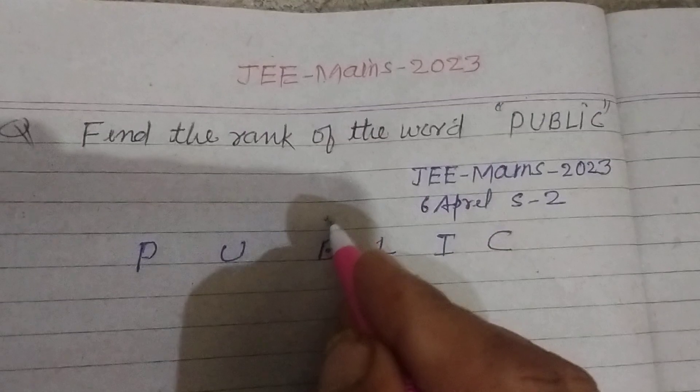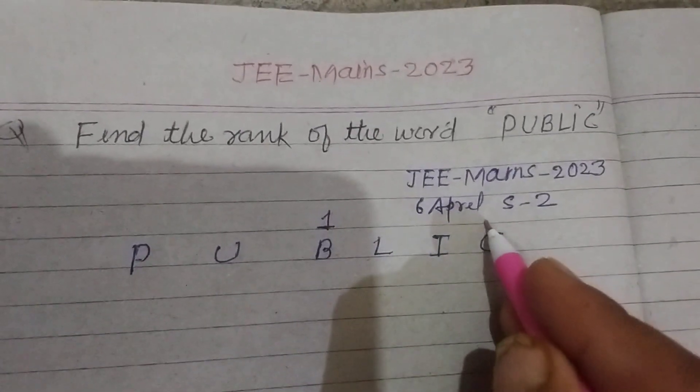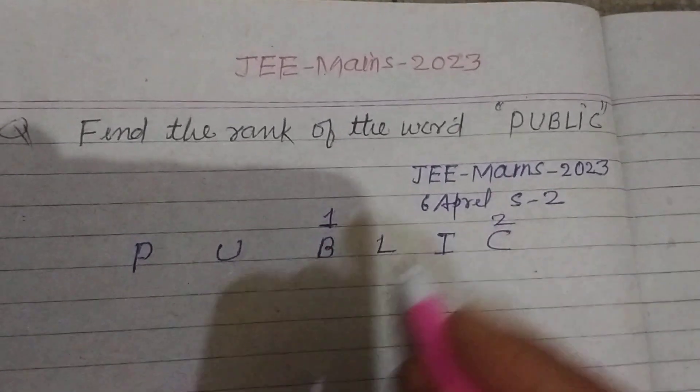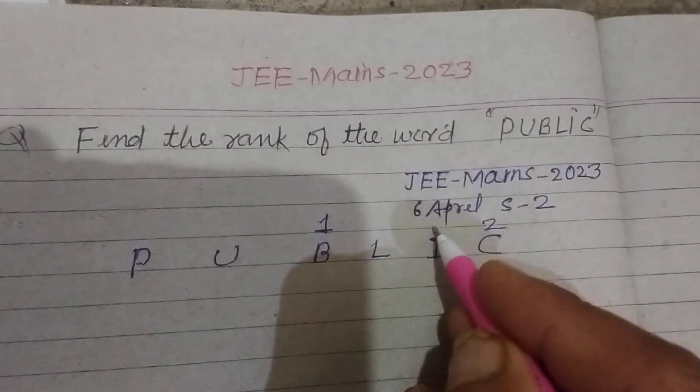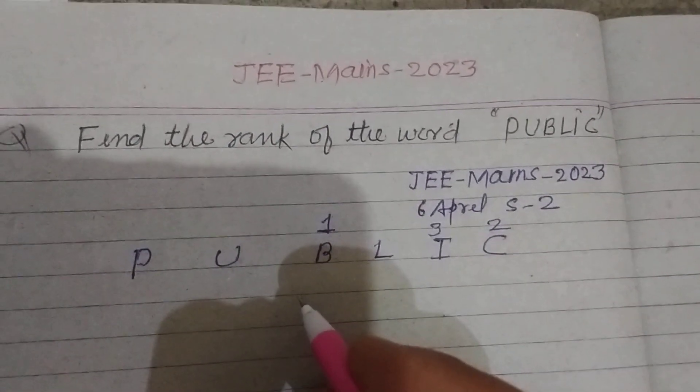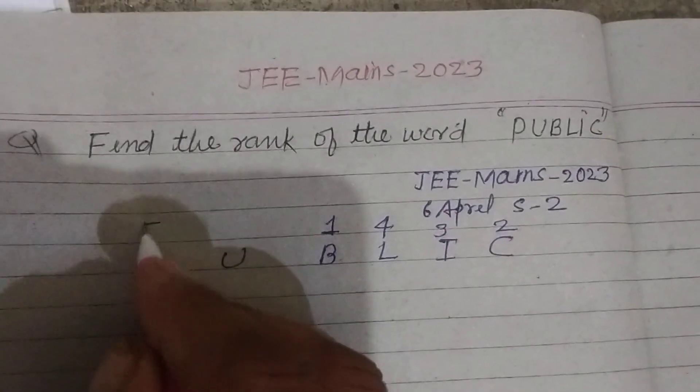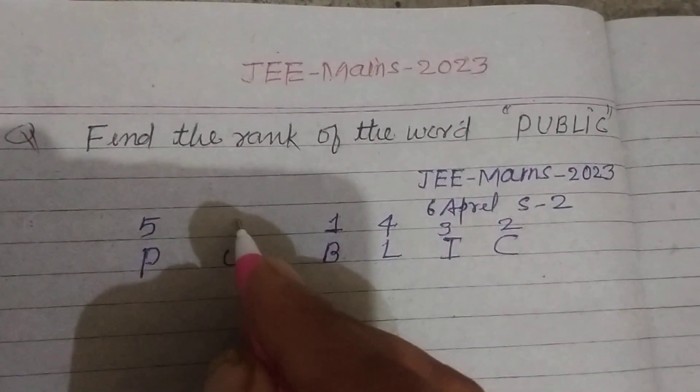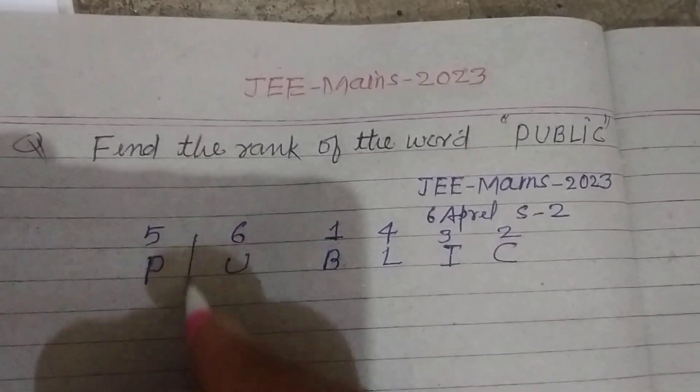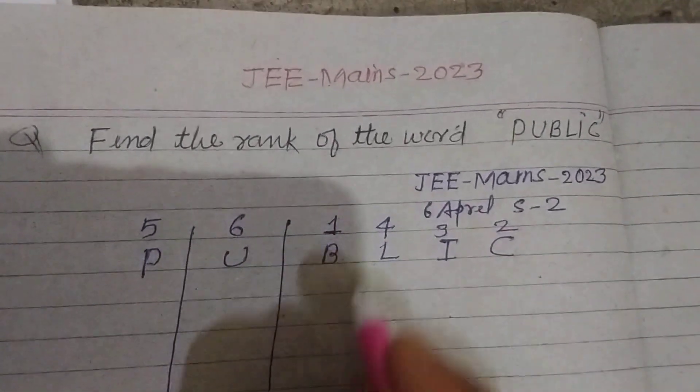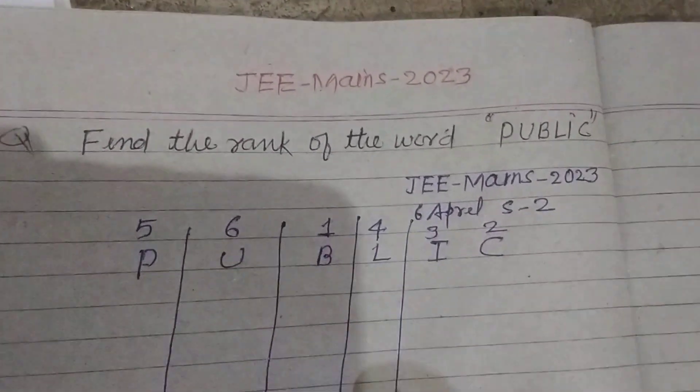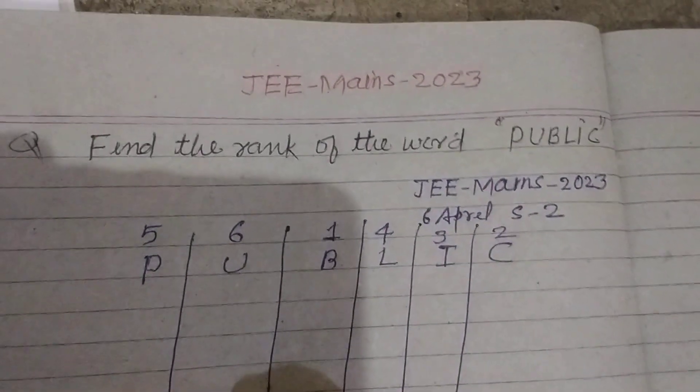So here B comes first, C comes second, I comes third, and L comes fourth, and P comes on the fifth number, and U comes on the sixth number. Now make the line in this way.